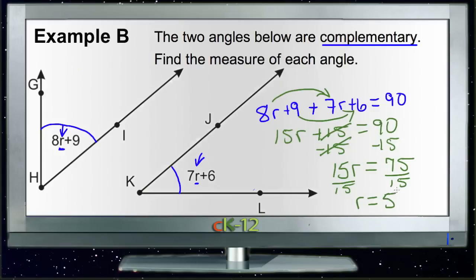If R is 5, then since the first degree measure is 8R plus 9, it would be 8 times 5 plus 9, or 40 plus 9, or 49 degrees.